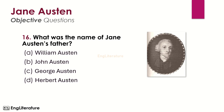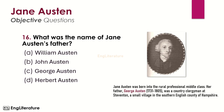What was the name of Jane Austen's father? Jane Austen was born into the rural professional middle class. Her father, George Austen, was a country clergyman at Steventon, a small village in the southern English county of Hampshire. The right choice is number C — Jane Austen's father's name was George Austen.